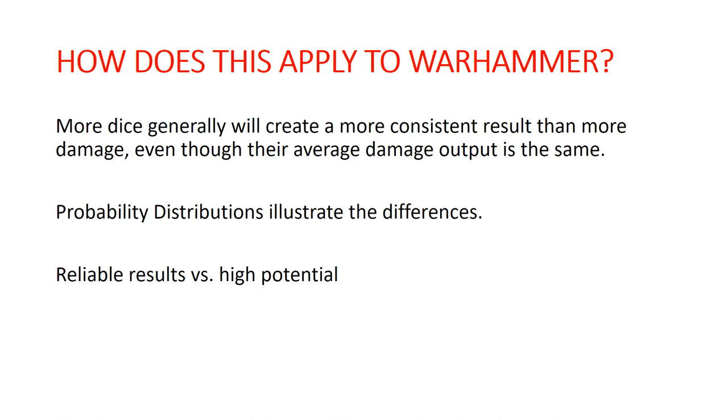The probability distribution is really just graphing this to understand what's going on. This is all about internalizing the expected results of die rolls. In general, the more dice you throw, the more consistent your outcome is going to be and the closer to your averages your actual output is going to be.